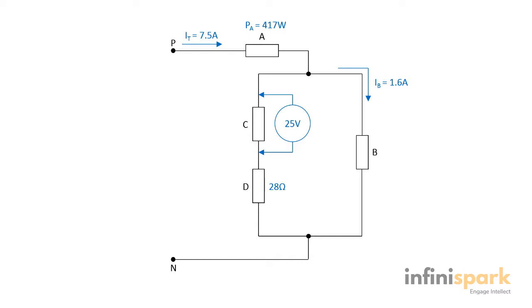We have been asked to find current through resistor C, that's IC, the supply voltage, that's VT, and the power dissipated by the circuit, that's PT.